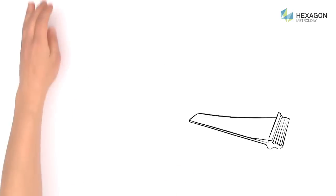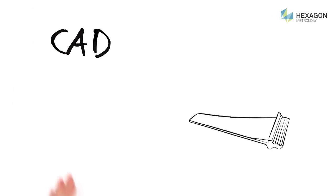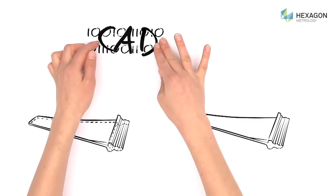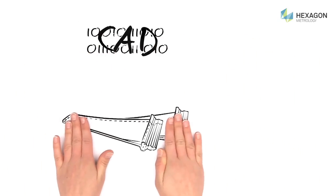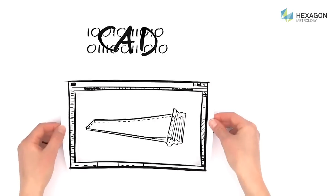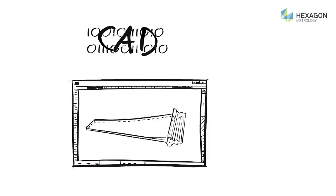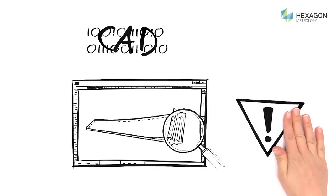The software now compares the original CAD model, a digital 3D model, with Peter's measurement data of the component. Thanks to the simple graphic representation, any deviations between the model and the real component can be detected at a glance. Peter can therefore now spot manufacturing defects immediately.